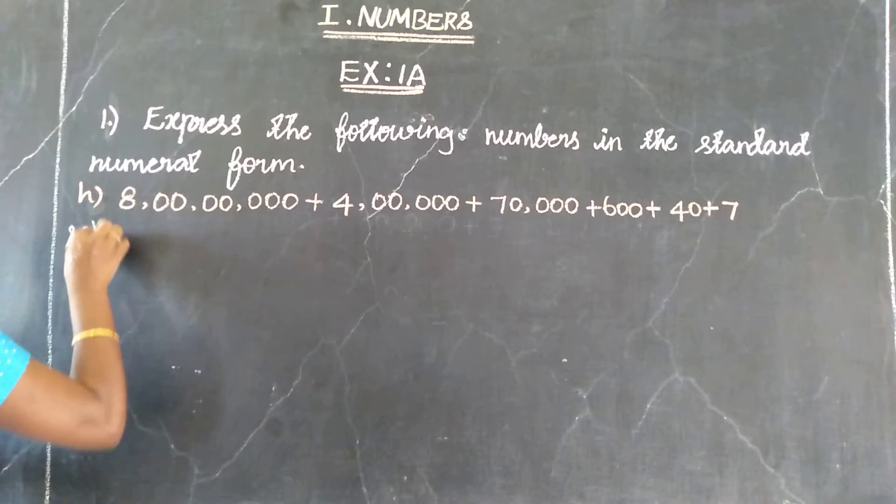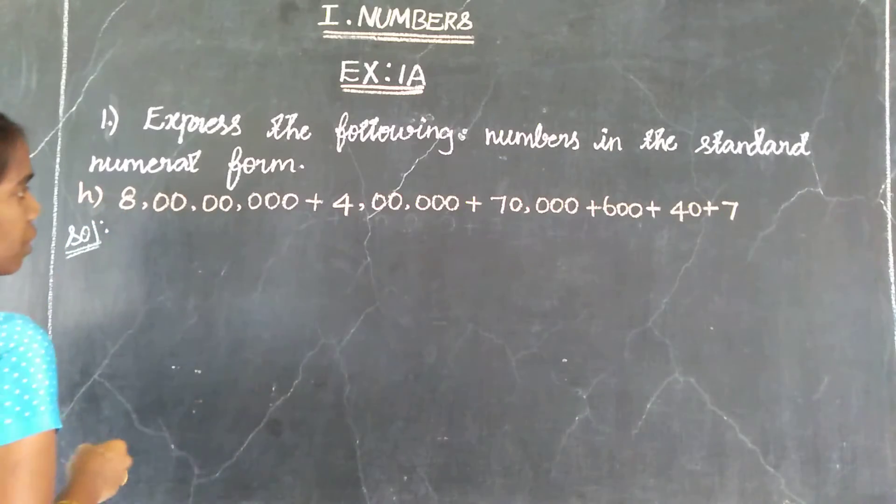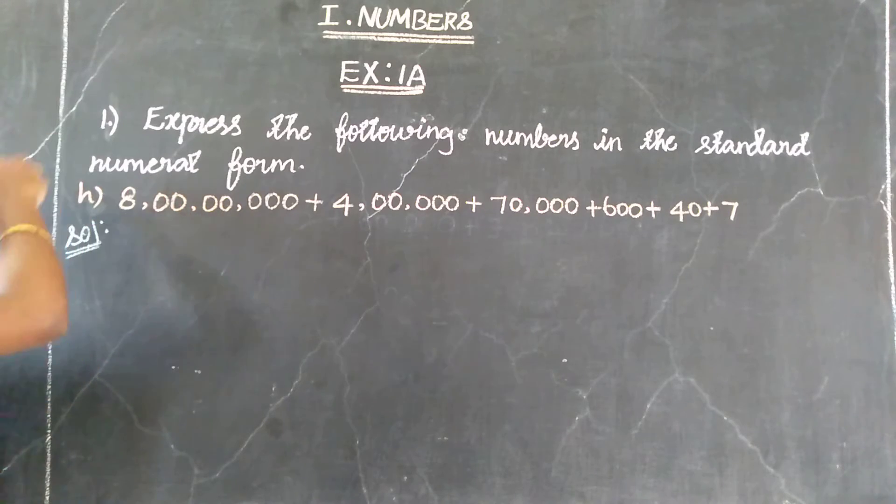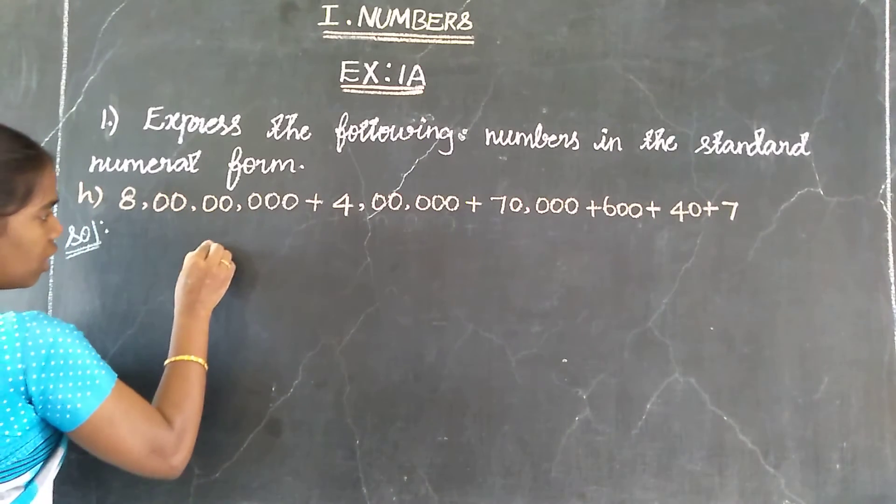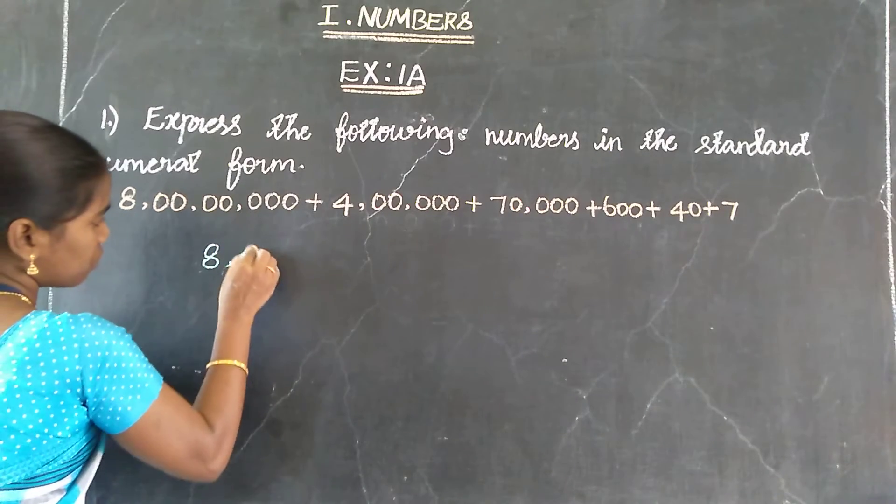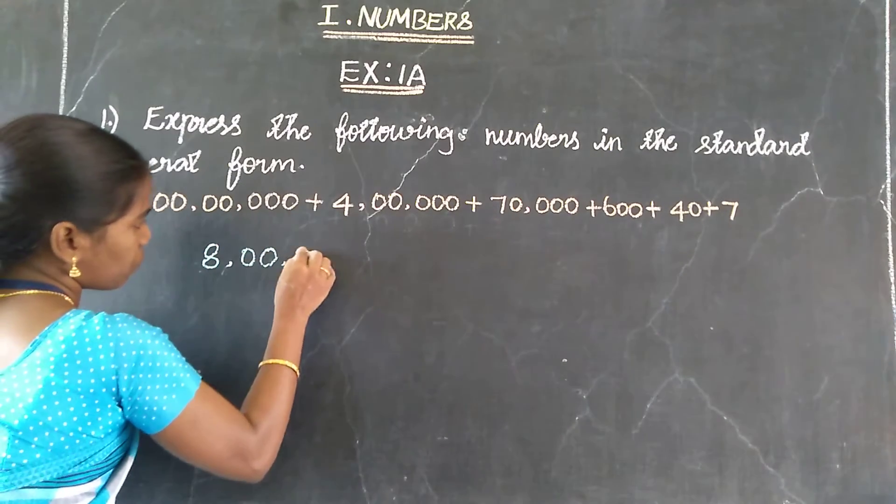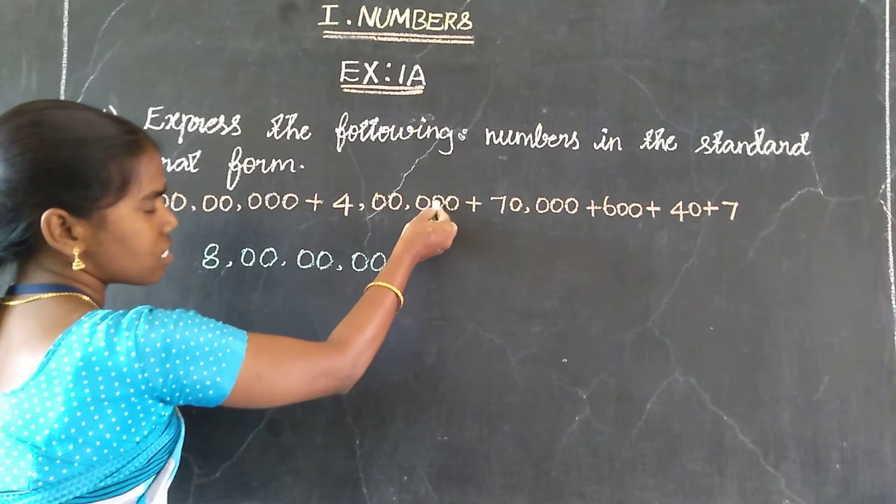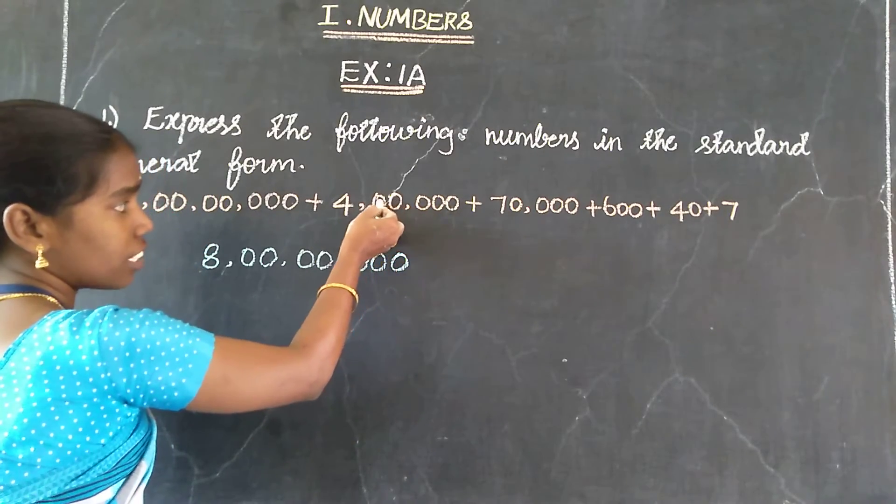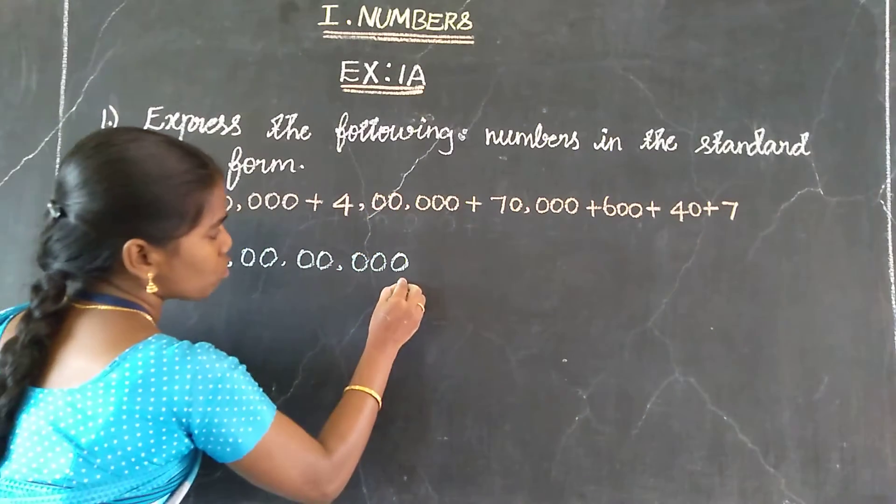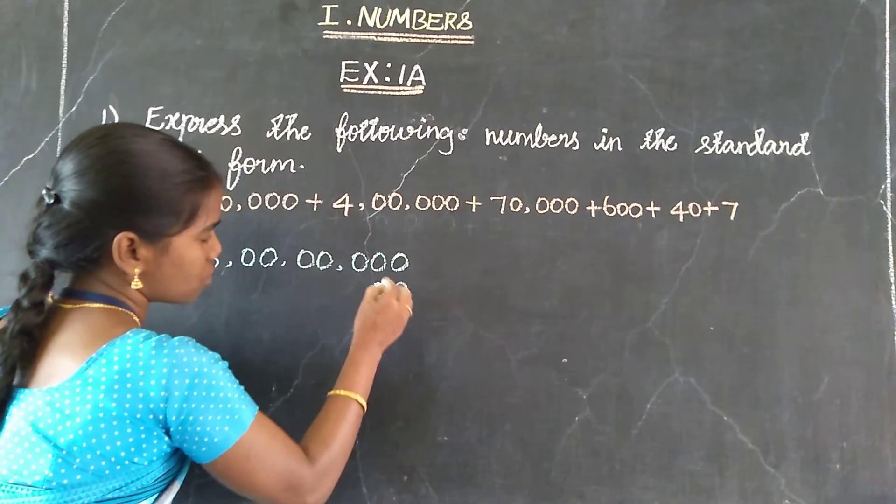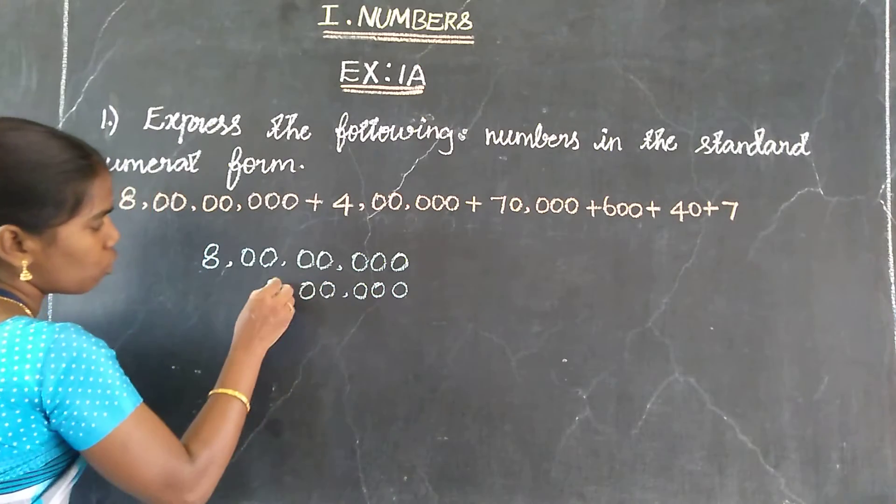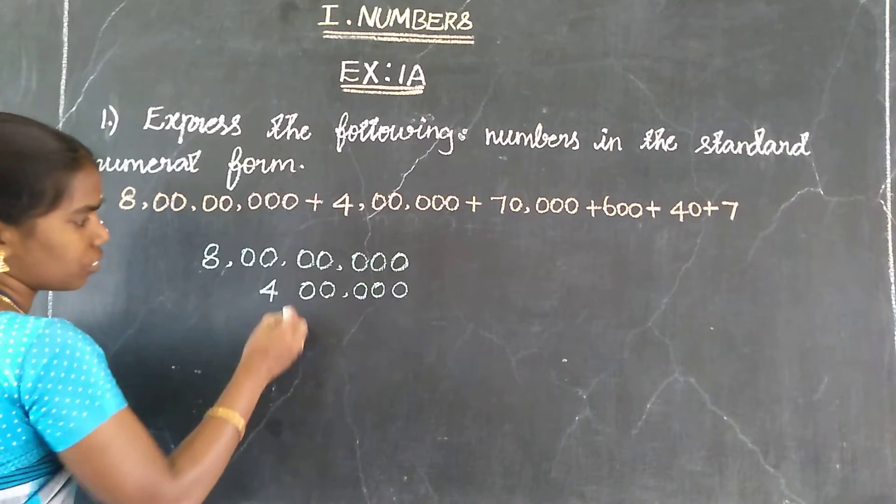Solution. First, the place values are: ones, tens, hundreds, thousands, ten thousands, lakhs, ten lakhs, crores. So 8 crore. Next number: ones, tens, hundreds, thousands, ten thousands, lakhs. 4 lakhs, so 1, 0, 0, then 0, 0, 4 lakhs.